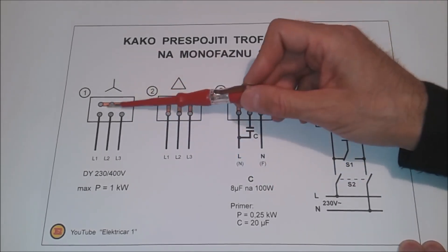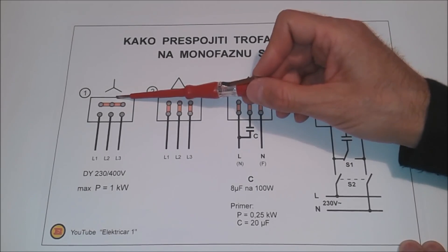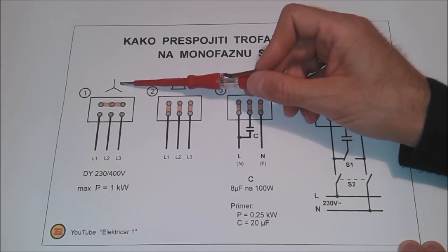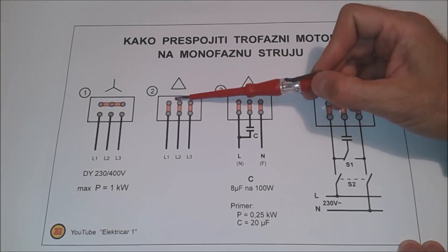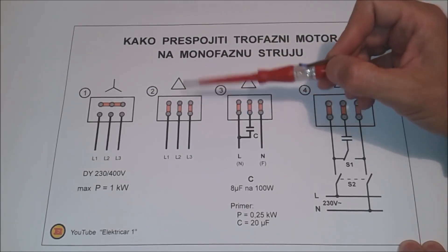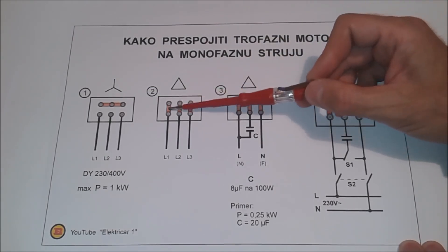The most common thing we will find when we open the cover of a three-phase motor is a star connection. The first thing we need to do is to make a connection with a delta connection. We do it like this.